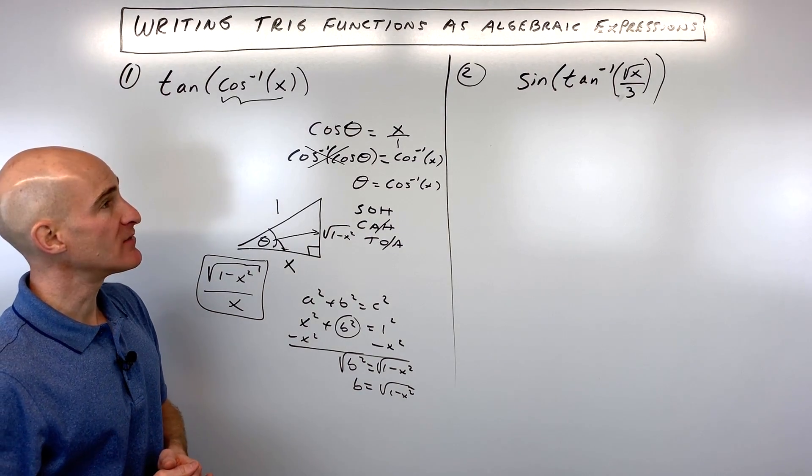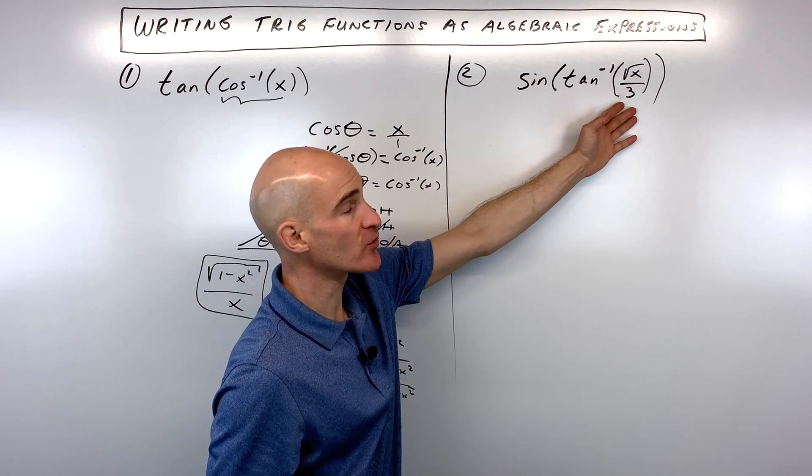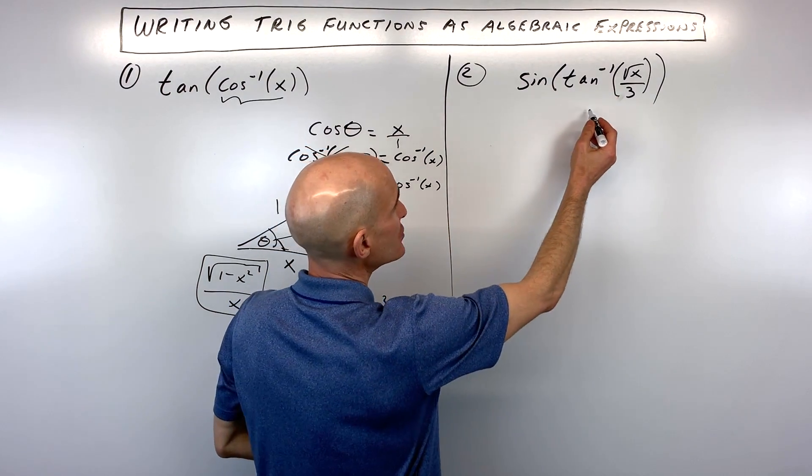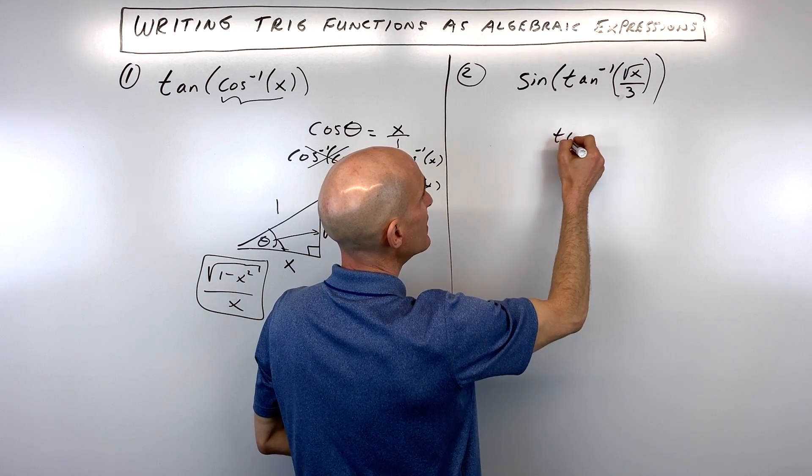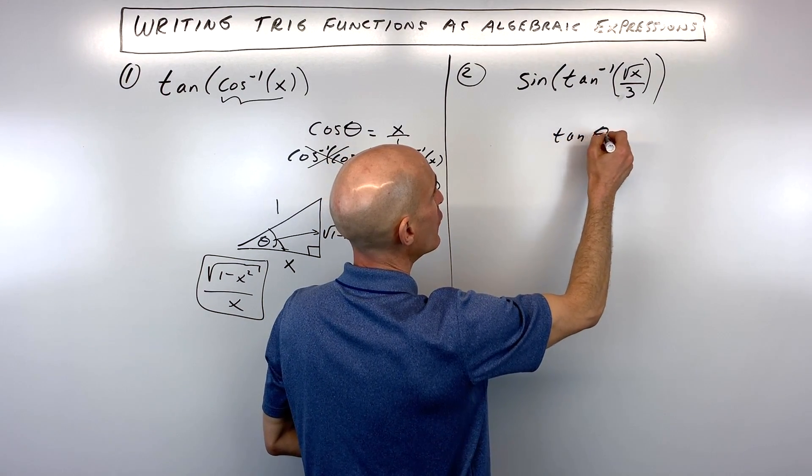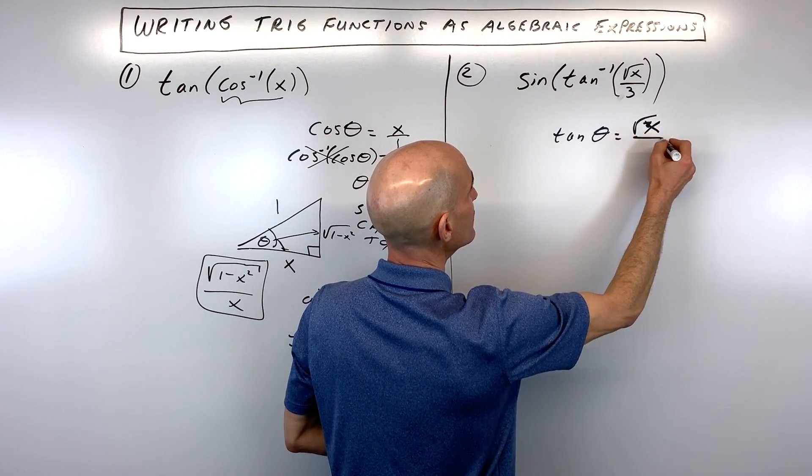So let's look at another example. See if you can do this one. We've got the sine of tangent inverse of square root of x over three. Now just again, a quick refresher. Tangent inverse of square root of x over three is another way of saying tangent of what angle equals square root of x divided by three.